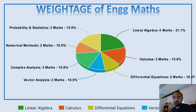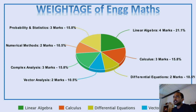This pie chart shows the weightage of these topics in engineering maths. Linear algebra appears for 21% of the time, calculus 15%, differential equations 10%, vector analysis 10%, complex analysis 15%, numerical methods 10%, and probability and statistics 15%. From this, you can see that linear algebra is one of the most important parts of engineering math, appearing for 21%.